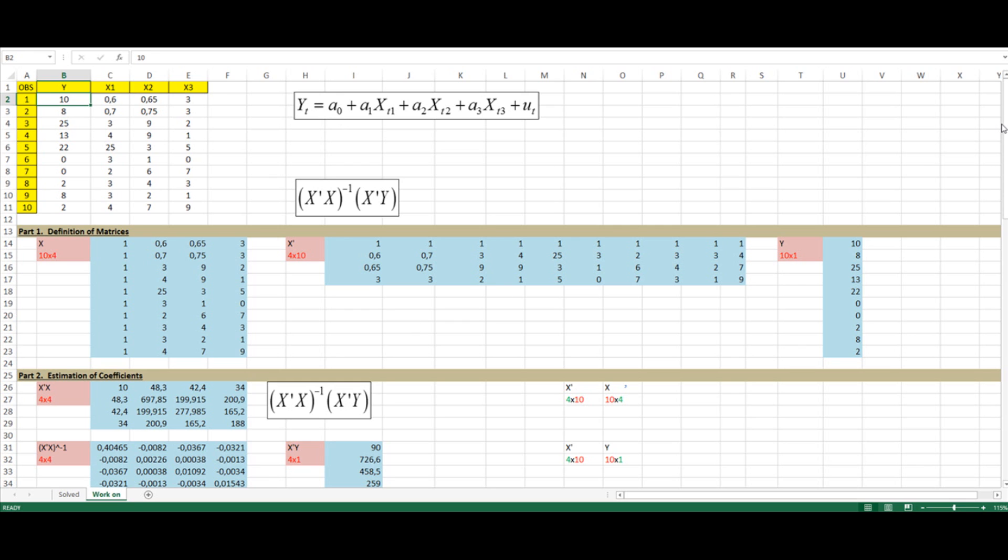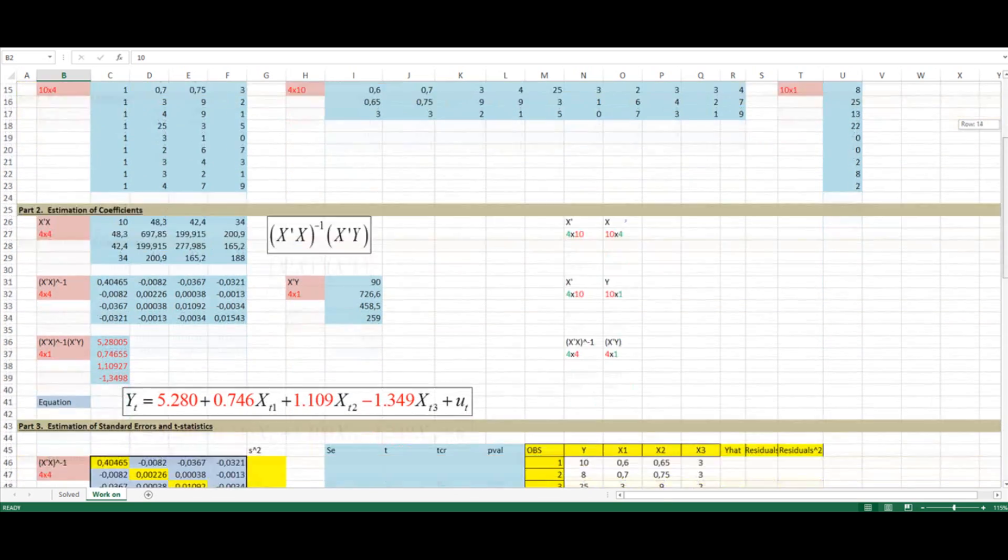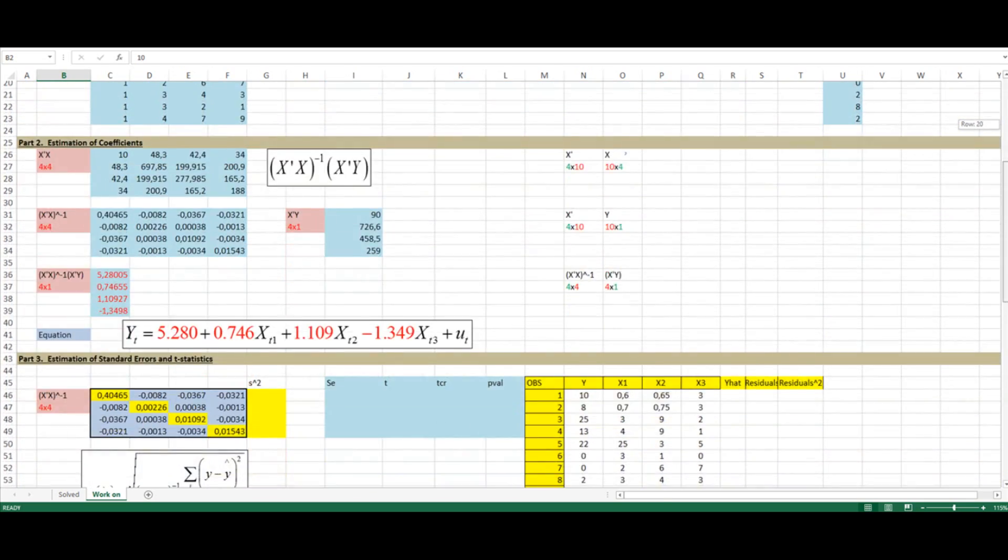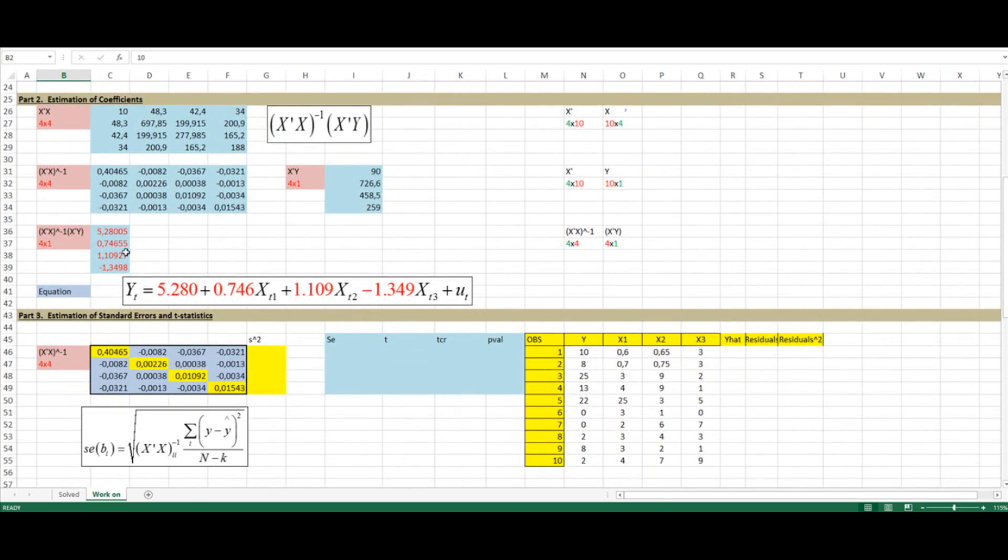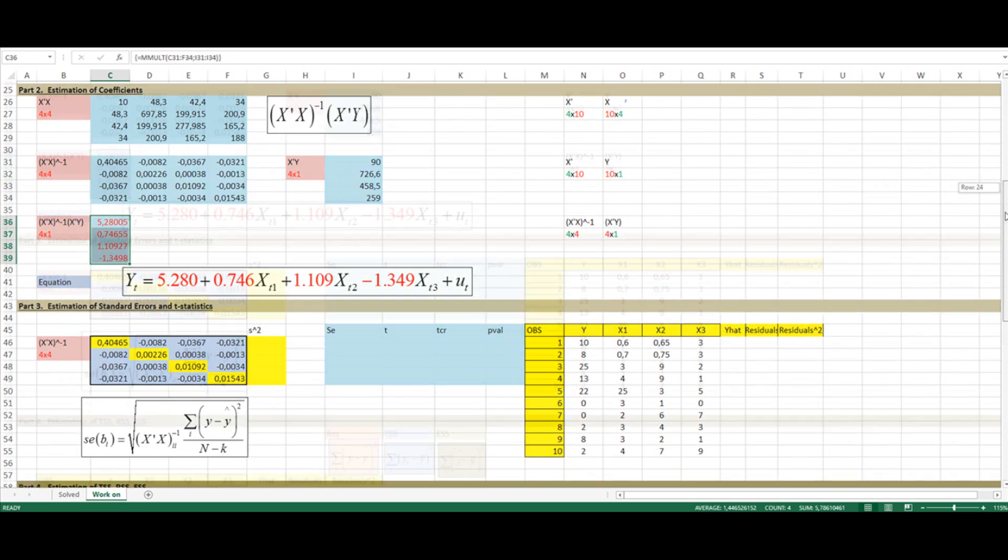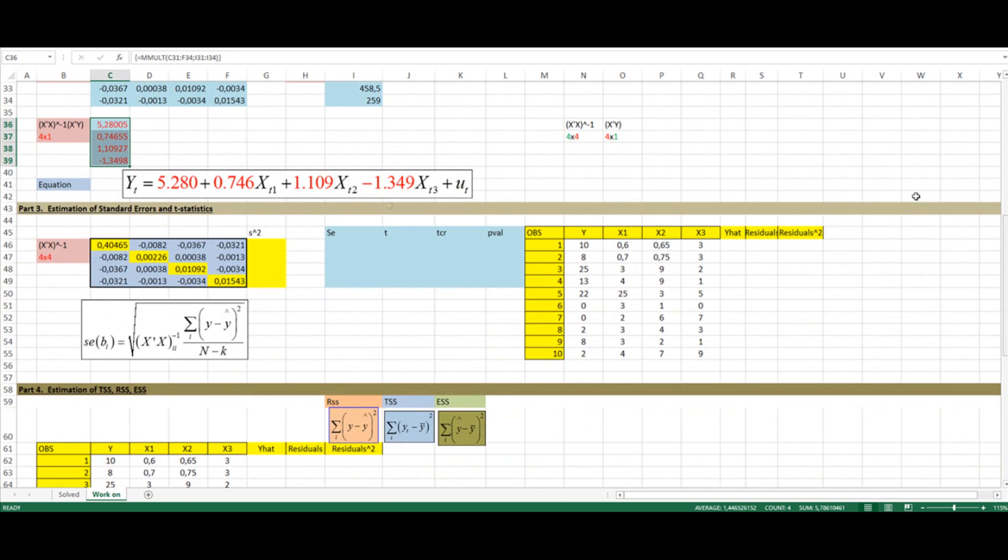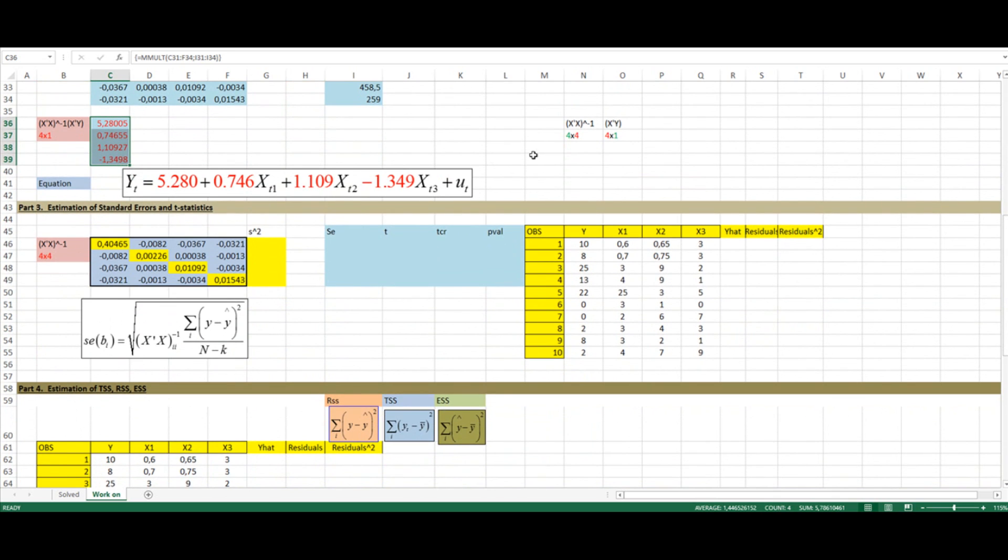And on the previous video, we managed to get the coefficients, which we see down here: 5.28, 0.746, 1.119, and -1.340 for x1, x2, x3. What we want to do in this second video is go through the standard errors and conduct the hypothesis testing for each one of the variables.